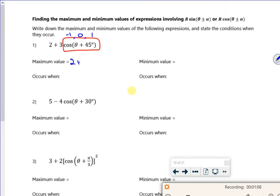So I want 2 plus 3 lots of 1. Because that's going to give me the biggest value for that equation. So that will give me 5. So that occurs when my red box is equal to 1.